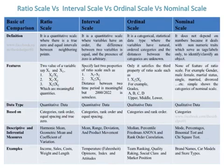The definition of ratio scale is that it is a quantitative scale where there is a true zero and equal intervals between neighboring points, while the definition of interval scale is that it is a quantitative scale where variables have an order, the differences between two variables are equal, and the presence of zero is arbitrary.